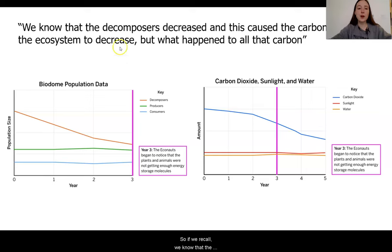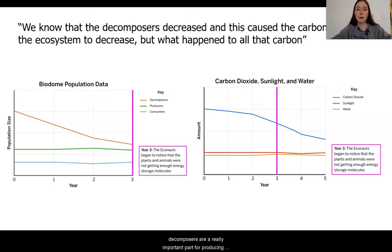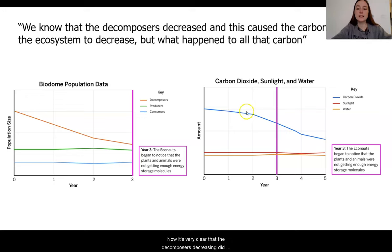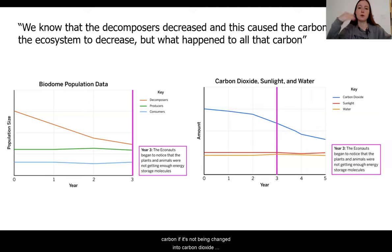If we recall, we know that the decomposers were decreasing — if we take a look at this orange line — around the first three years that the biodome was existing. We know that the decomposers are a really important part for producing that carbon dioxide, just like the producers and the consumers. They do this process of cellular respiration to release that carbon dioxide that is so important for the producers to do photosynthesis. Now, it's very clear that the decomposers' decreasing did, in fact, have an effect on the amount of carbon dioxide that was produced. So we're wondering: where is all of that carbon? If it's not being changed into carbon dioxide through cellular respiration, where are all those atoms?